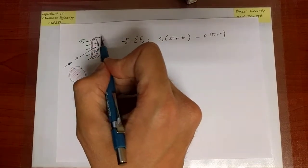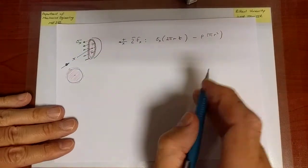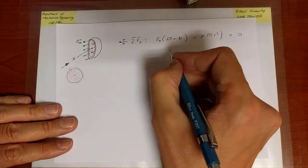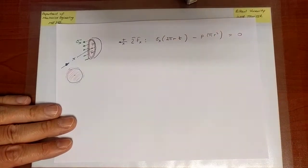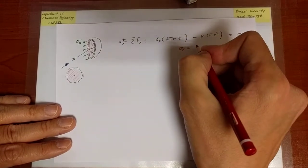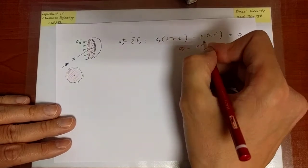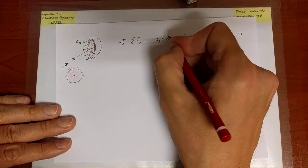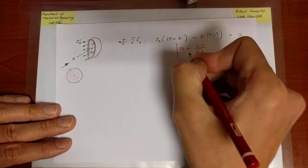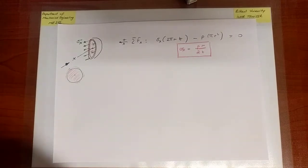Even if the cap had some irregular shape, the net force along the x direction would still be pi r squared. So all I need to put in here is simply pressure times pi r squared. Setting the sum of forces to zero, I find that sigma x is equal to p r over 2t.